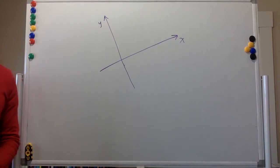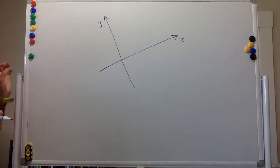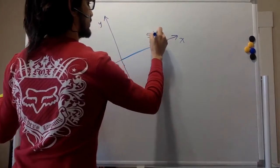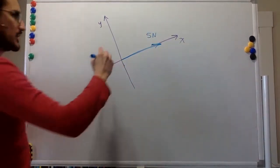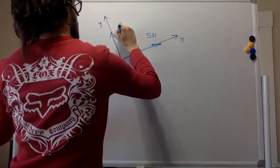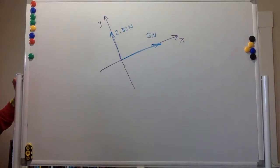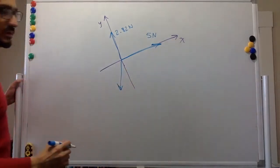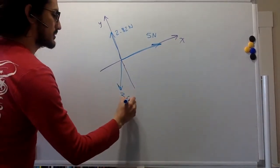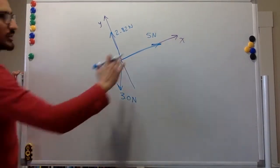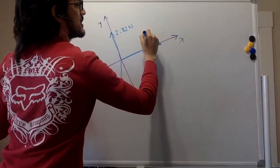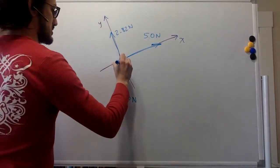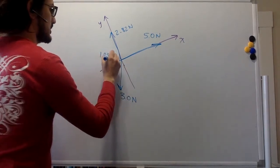The forces are one in this direction, which is 5 newtons, one in this direction which is 2.82 newtons. Then you have one going straight down like that — that one is 3 newtons, this one is 5.0 significant figures. And this one over here is 1 newton.